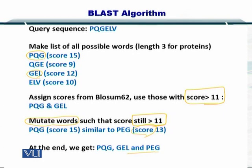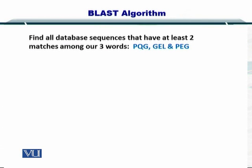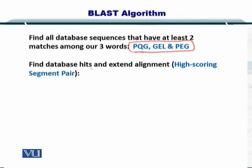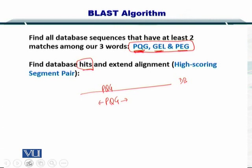In the end, we have three words: PQG, GEL, and PEG. We then go to the database with these three words and search for hits. A hit means we find matches for these words within the database. Once we have a hit — say, a protein from the database matches PQG — we try to extend this alignment.